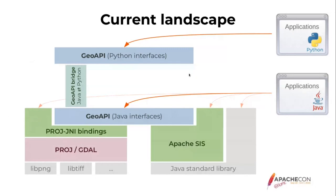It is also possible for Python developers to use GeoAPI. At this time we do not yet have a direct Python implementation, but we have an indirect one because GeoAPI provides a bridge between Java and Python. Python developers can use any Java implementation of GeoAPI, which means indirectly PROJ or Apache SIS. Of course, for Python it is a little convoluted in the case of PROJ because Python developers could use PROJ in a much more direct way, but the indirect way with the bridge does work.